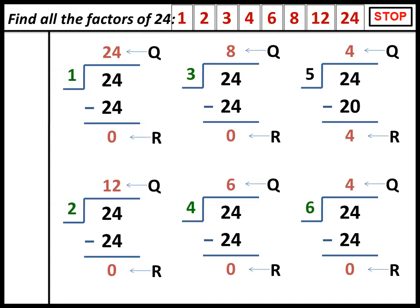Remember, always write the factors in ascending order. Thus, the factors of 24 are 1, 2, 3, 4, 6, 8, 12, and 24.